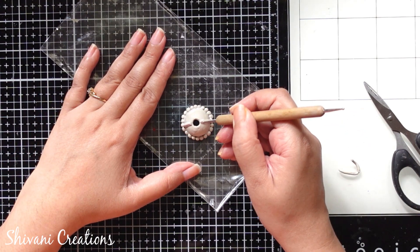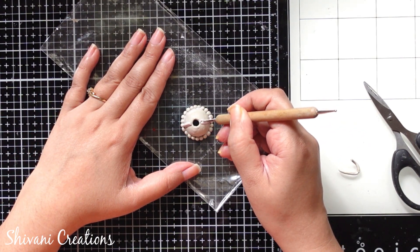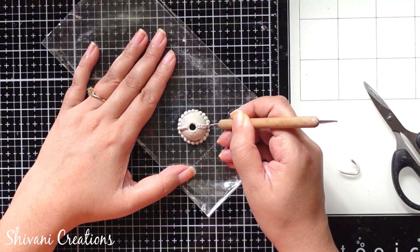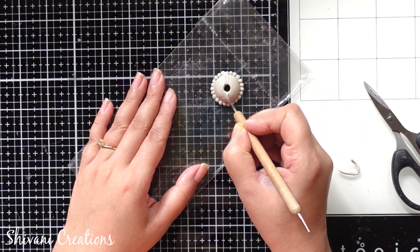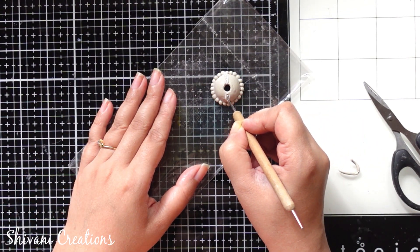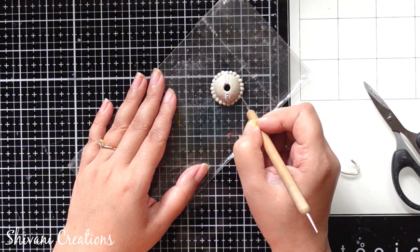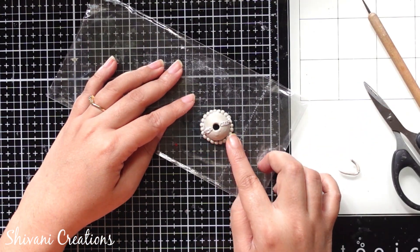Then using the ball tool I am making texture again on these pipes. In the same way I am adding two pipes here and two pipes here.